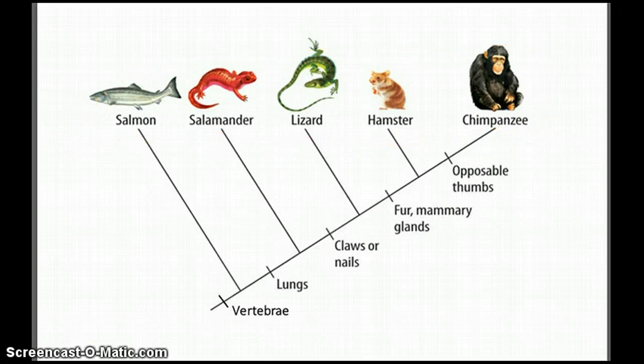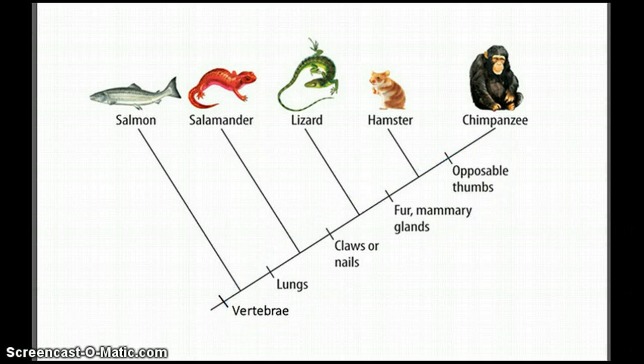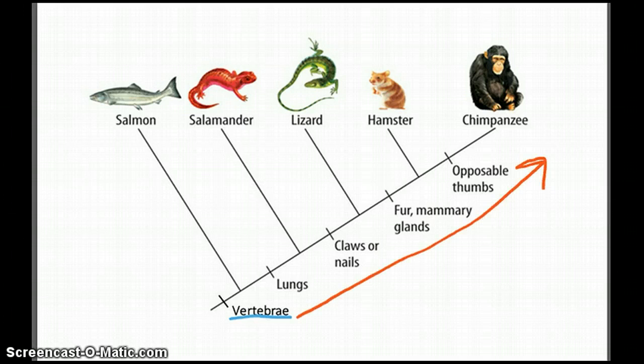Along the side of a cladogram, you will usually have different characteristics, and these characteristics are what separate the various organisms from one another. For example, all the way down here is the characteristic vertebrae. What this tells me is that every organism from this point on has a spine.